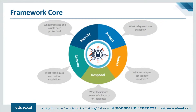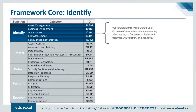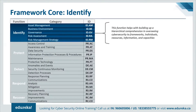Now let's dive deeper into the functions to see what they actually do and what purpose they serve. The functions are at the highest level of abstraction in the framework and act as the backbone of the framework core. The first function is Identify, which helps develop an organizational understanding to manage cybersecurity risk to systems, people, assets, data, and capabilities. Understanding the business context, the resources that support critical functions, and related cybersecurity risks enables an organization to focus and prioritize its efforts consistent with its risk management strategy. Examples of outcome categories include asset management, business environment, governance, risk management, and risk assessment.